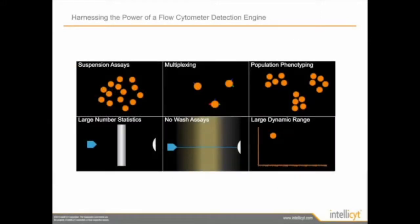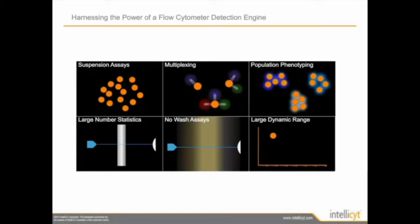With high-throughput flow, we are harnessing all the powerful capabilities of a traditional cytometer, such as working with suspension cells, multiplex assays looking at various markers at the same time, looking at different cell populations, and looking at large numbers of samples to get more statistically relevant data. With HTF, you have the ability to work with no-wash assays since each event is interrogated at a time, plus the unique ability to look at dim and bright events together within a single assay due to a large dynamic range. This capability allows you to work with cells and beads together in a single experiment.